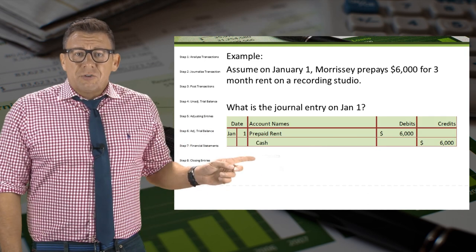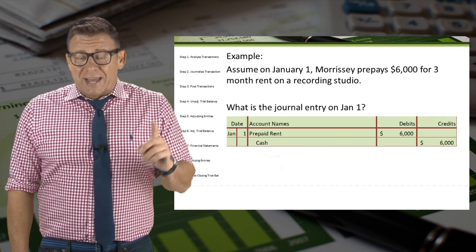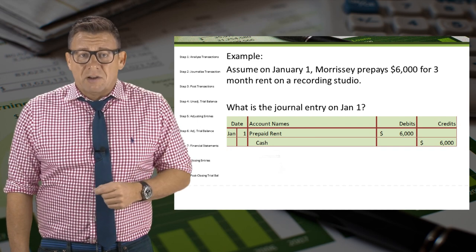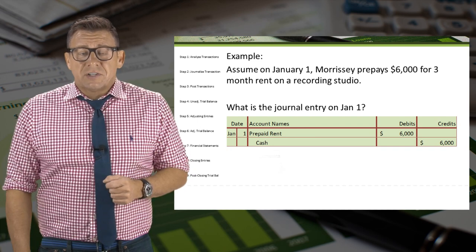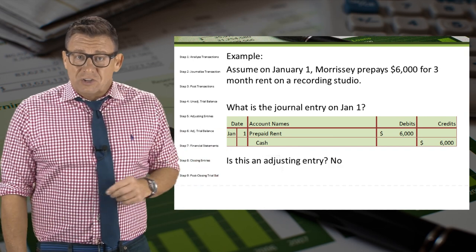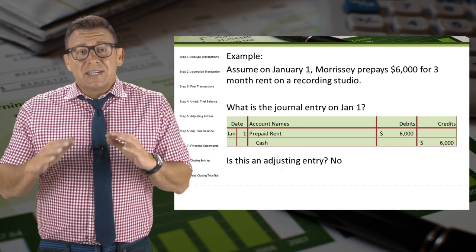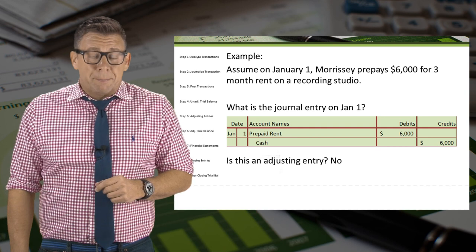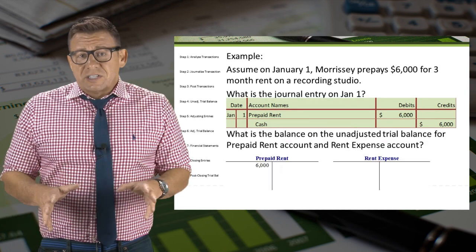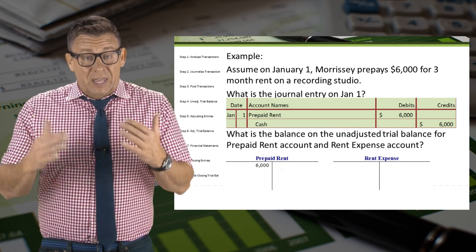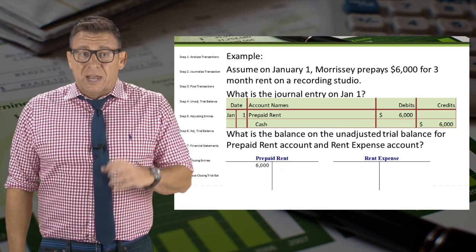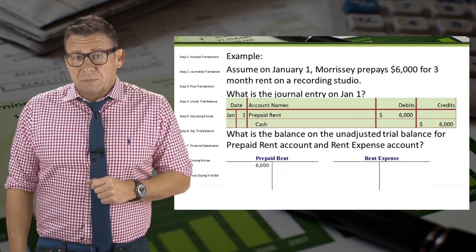The journal entry on January 1 is a debit to the asset account, prepaid rent, and a credit to the asset account, cash, for $6,000. This is not an adjusting entry because there is an underlying transaction that happened on January 1. So the unadjusted balance for prepaid rent at the end of the month is still $6,000, and as of yet, no rent expense has been recorded.